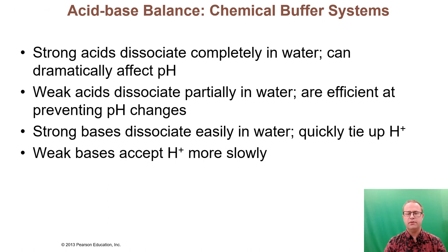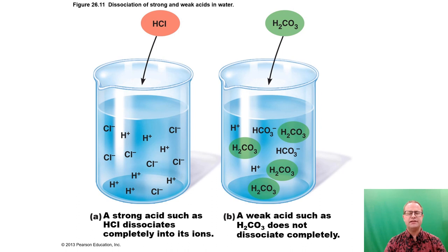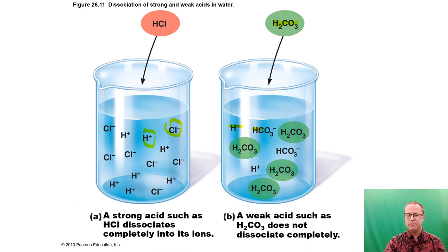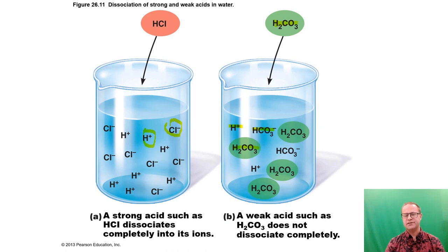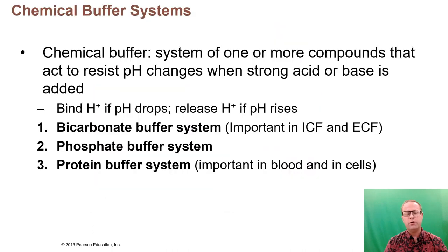A strong acid like hydrochloric acid dissociates completely into hydrogen ions and chloride ions when added to water, having an extreme effect on pH. A weak acid like carbonic acid (H2CO3) only partially dissociates, forming some hydrogen ions and some bicarbonate ions, with much remaining as carbonic acid. Weak acids and weak bases are good buffer systems because they only partially dissociate — they can scavenge up excess hydrogen ions or hydroxyl ions to minimize changes in pH. Our chemical buffers are all weak acids or weak bases.